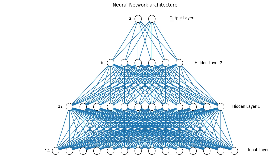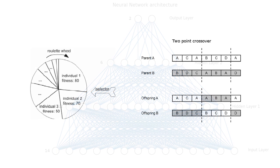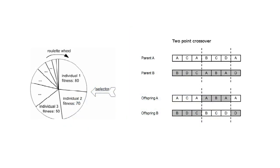Each panda has a multi-layer perceptron consisting of 14 inputs, two hidden layers of 12 and 6 neurons respectively, and two outputs. All layers are fully connected and the activation function is the hyperbolic tangent. The weights of the network are generated using a genetic algorithm. The population is selected with the roulette wheel method and the crossover method is a two-point list.